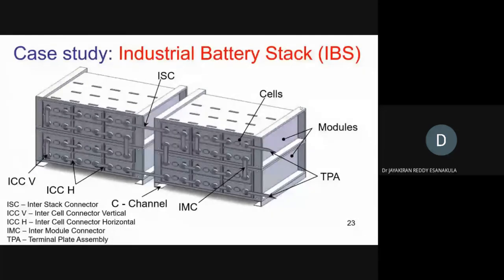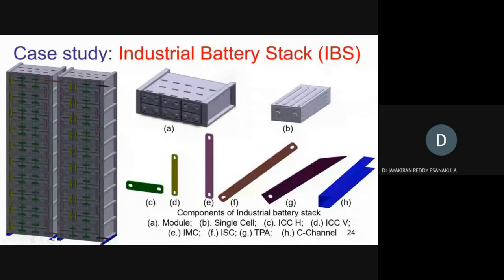Here is the simple CAD model developed at the first stage. The vertical connector is called ICCV (intercell connector vertical). The horizontal one is called ICCH (intercell connector horizontal). At the bottom is a channel that takes the entire weight of the batteries. The horizontal one connecting between stacks is called ISC (interstack connector). On the right side you can see different assembled modules and connectors. The H-figure is the channel — all these are generated by the system as a CAD model.